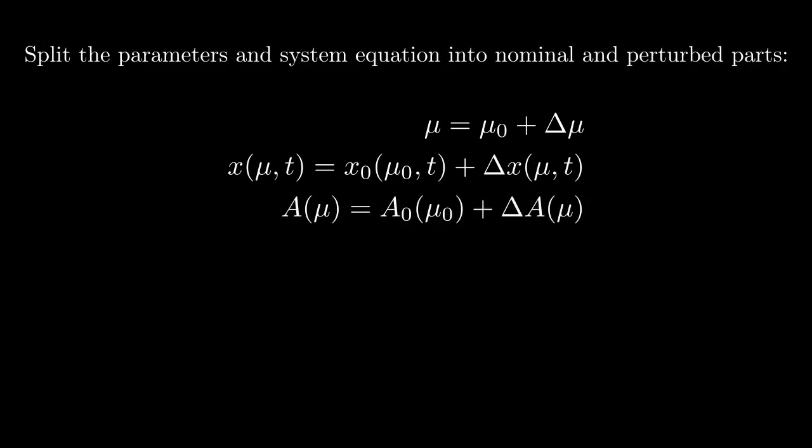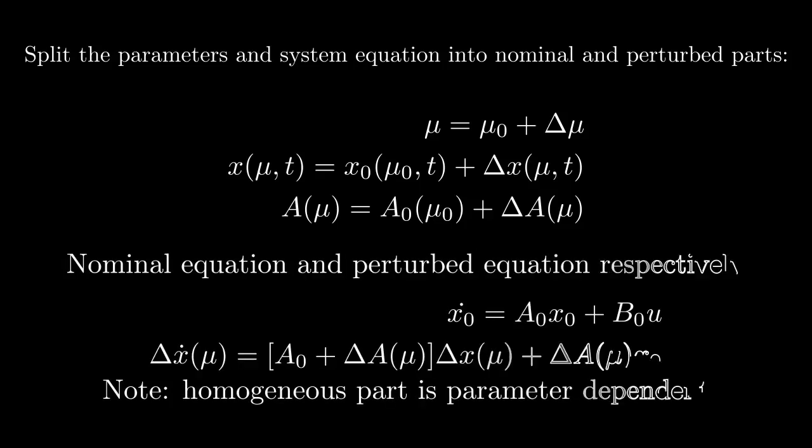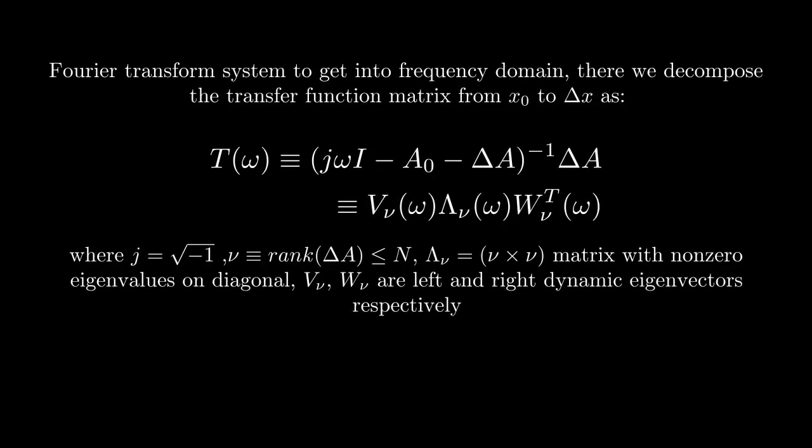Split up the system now into nominal and perturbed parts, where the nominal is some fixed condition, some fixed parameters, and the perturbed is some variation from that. Plugging those into the state space representation of our system, we find a nominal equation and a perturbed equation. Note that the homogeneous part is parameter dependent. In the frequency domain, we can define the transfer function matrix connecting the nominal solution and the perturbed solution. An eigendecomposition of this matrix gives us left and right dynamic eigenvectors, v and w, and the dynamic eigenvalues, lambda. The rank of the system will be that of delta A, which will be less than or equal to the full rank of the system n.